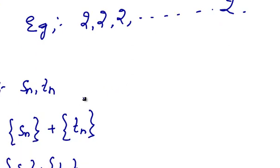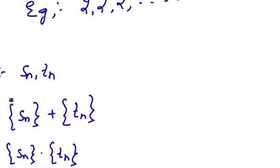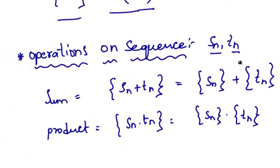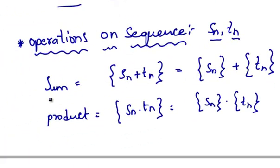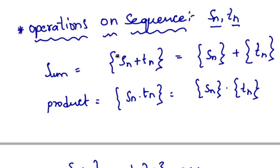Now let's see operations on sequence. Let Sn, Tn be two sequences. Then the sum of sequences is Sn plus Tn equals sequence Sn plus sequence Tn. The product of the sequence Sn and Tn is equal to sequence Sn into sequence Tn.